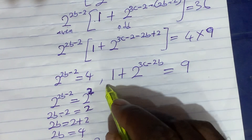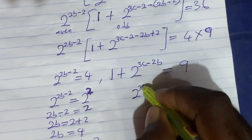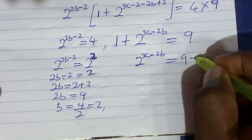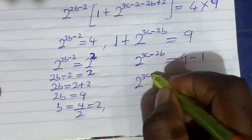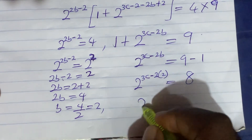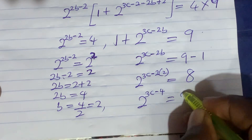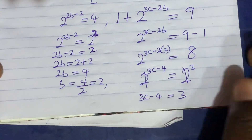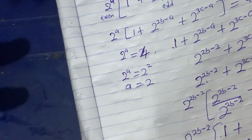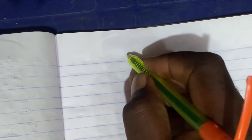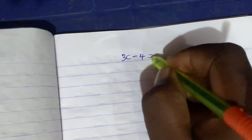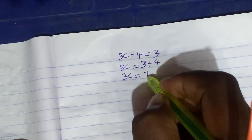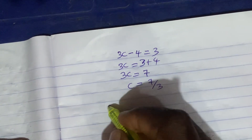Now solving for C. From the odd part: 1 + 2^(3C−2B) = 9, so 2^(3C−2B) = 8. With B = 2, this becomes 2^(3C−4) = 2^3, so 3C − 4 = 3, giving 3C = 7, therefore C = 7/3.